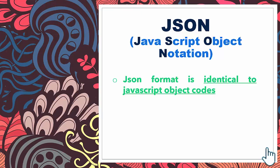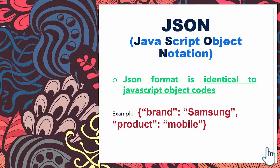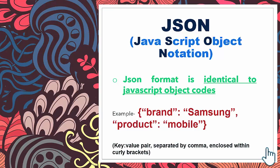JSON format is identical to JavaScript object codes. Here is an example. In this code, we format the data in key-value pairs — key, colon, value, comma, another key, colon, value — and enclose within curly brackets. This means JSON objects.